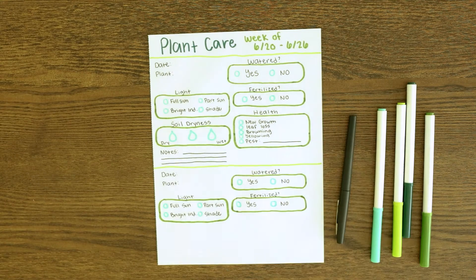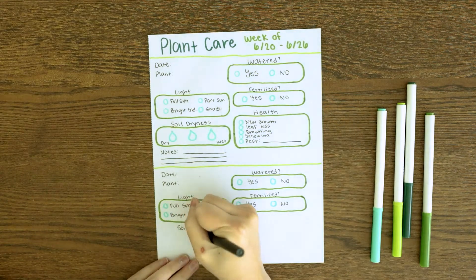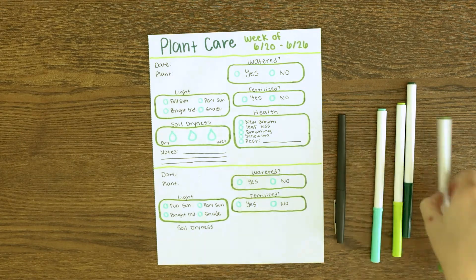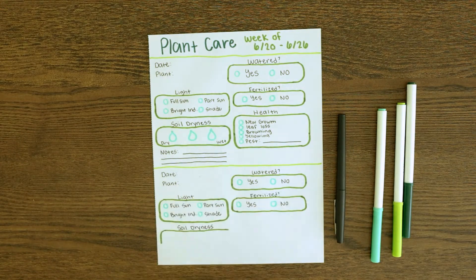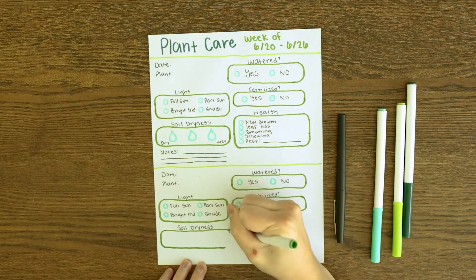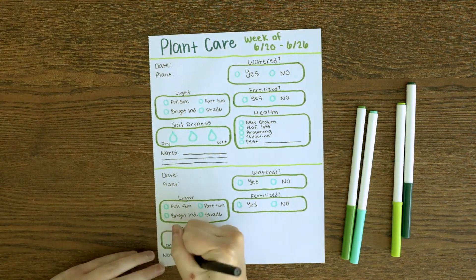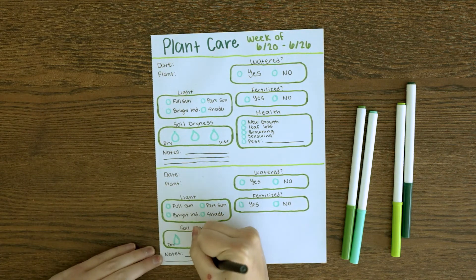So again, did you water your plant? What was the light like today? Did you fertilize it today? How dry was the soil or wet? And then the health. All of these things just help you understand your plant.